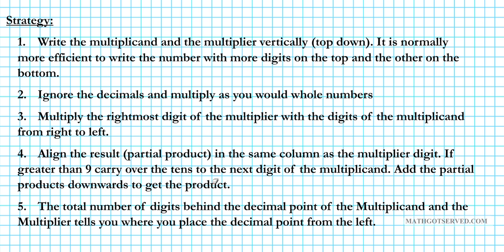First thing you want to do is write the multiplicand and the multiplier, the factors that you're multiplying vertically. You write them one on top of the other. Now it's normally more efficient to write the number with more digits on top and the other on the bottom. It's much easier to organize when you have the number with more digits on the top as opposed to the bottom.